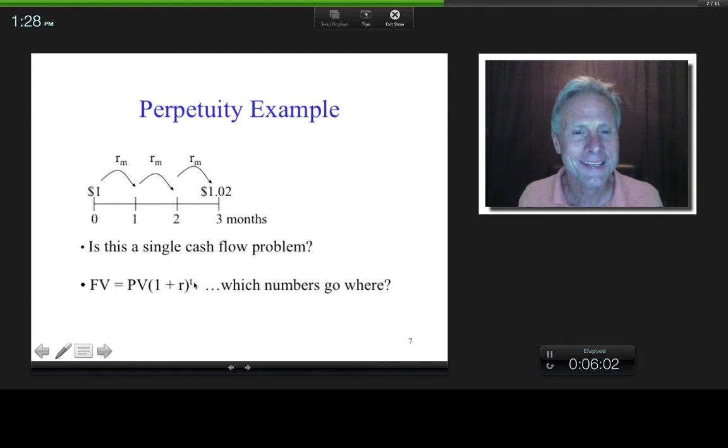And what's my T? How many periods am I bringing this dollar forward? Three monthly periods, right? So therefore, what's my T? It's three.